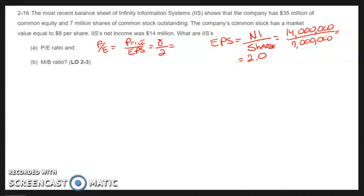So 8 divided by 2 is 4. Our P-E ratio, our earnings multiple, our price earnings multiple is 4.